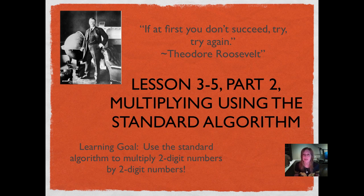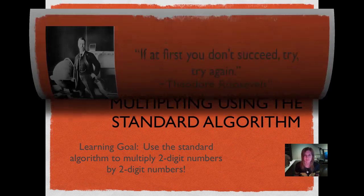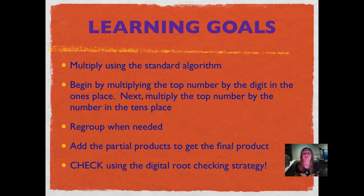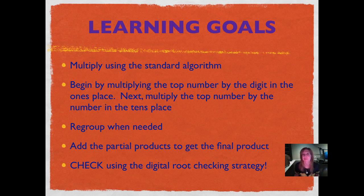Learning Goal: Use the standard algorithm to multiply two-digit numbers by two-digit numbers. Here are our individual lesson learning goals: Multiply using the standard algorithm. Begin by multiplying the top number by the digit in the ones place, then multiply the top number by the digit in the tens place. Regroup whenever you need to, and add your partial products to get the final product. Don't forget to check using the digital root checking strategy — we'll be practicing that again tonight.